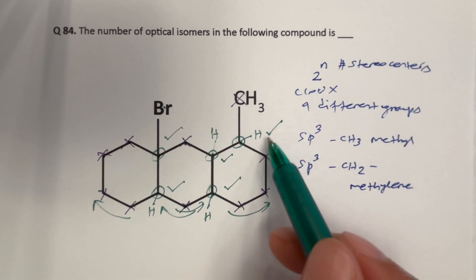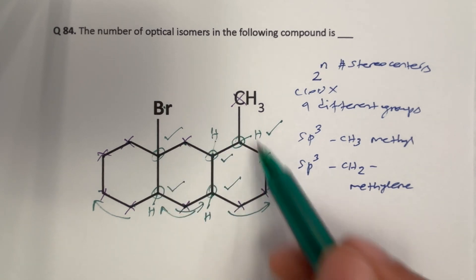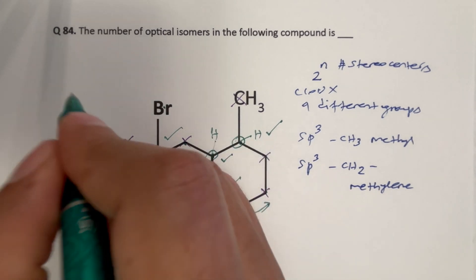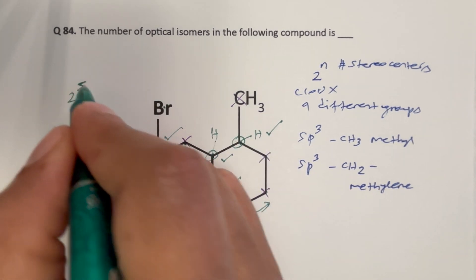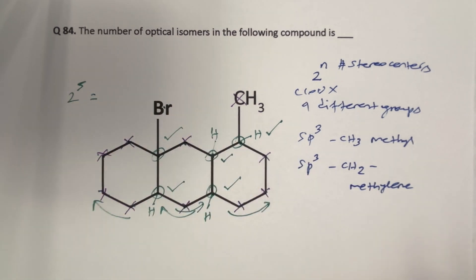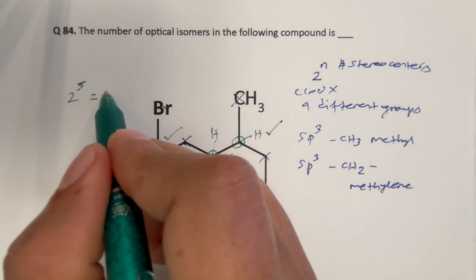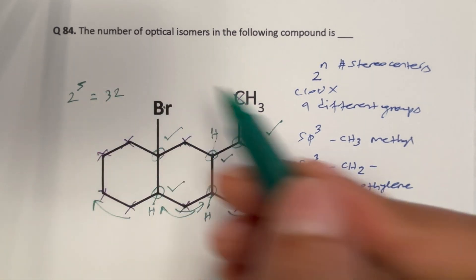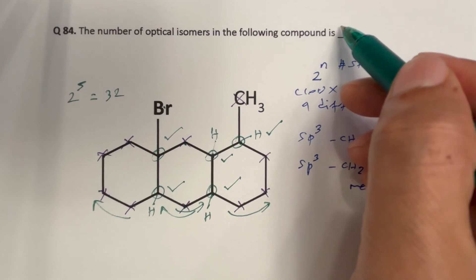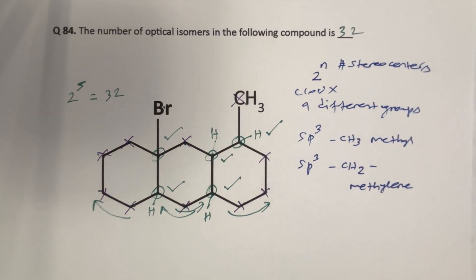This means that we have 5 chiral carbons, so the number of optical isomers is 2 to the power 5. Since 2 to the power 4 is 16, 2 to the power 5 is 32. Therefore 32 is the correct answer.